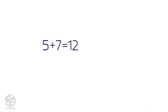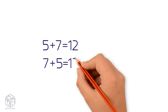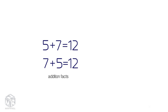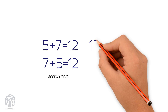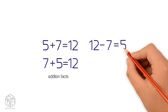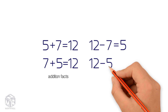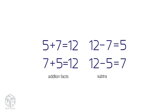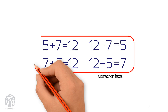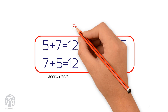Let's try another example. 5 plus 7 equals 12. 5 and 7 are the addends and 12 is the sum. We can change the order of the addends and the sum will remain the same. 7 plus 5 is also equal to 12. These are the addition facts. Now let's write the subtraction facts. We subtract one part from the whole to get the other part. 12 minus 7 equals 5. 12 minus 5 equals 7. These are the subtraction facts. These two addition facts and two subtraction facts make the fact family.